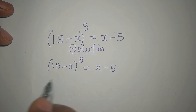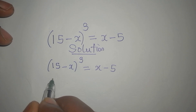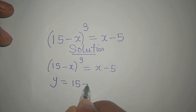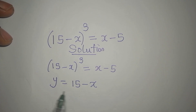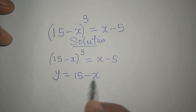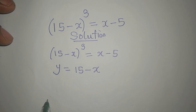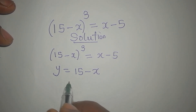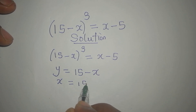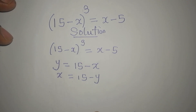We are going to represent what we have here with a letter — let's say letter Y. So we're saying Y equals 15 minus X. But if I write Y here and leave X, I'll have two unknowns, which is wrong. So I'll make X the subject: X equals 15 minus Y.